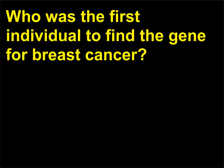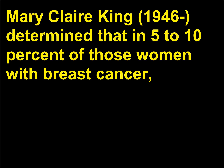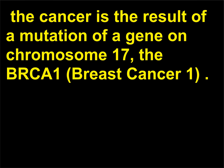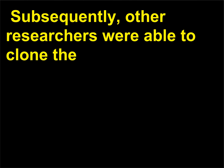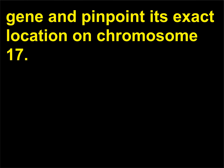Who was the first individual to find the gene for breast cancer? Mary Claire King, 1946, determined that in 5 to 10 percent of women with breast cancer, the cancer is the result of a mutation of a gene on chromosome 17 — the BRCA1, or breast cancer 1, gene. The BRCA1 gene is a tumor suppressor gene and is also linked to ovarian cancer. Subsequently, other researchers were able to clone the gene and pinpoint its exact location on chromosome 17.